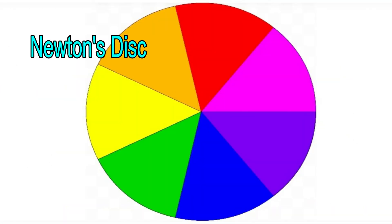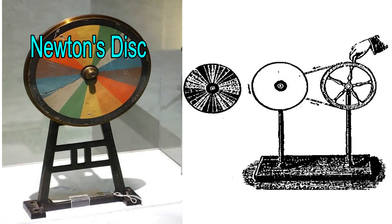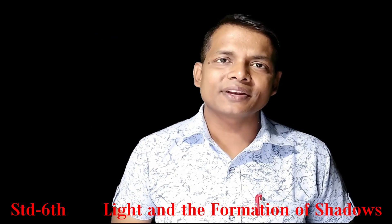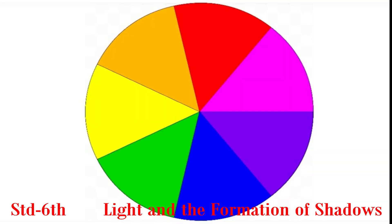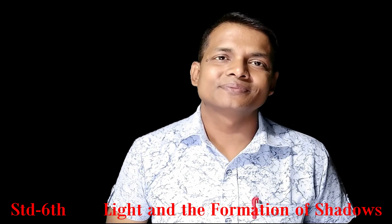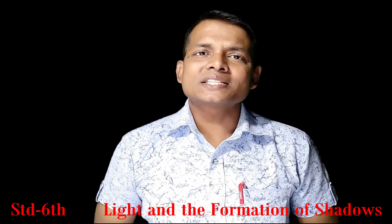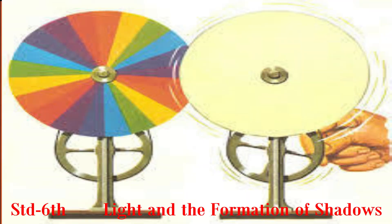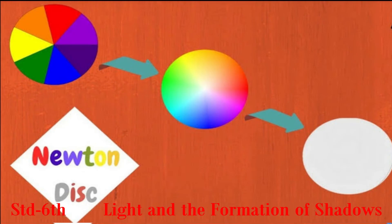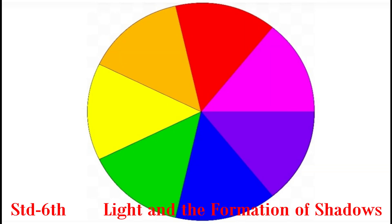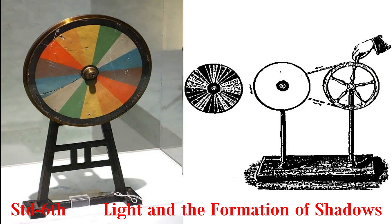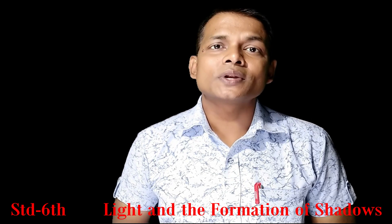Newton's Disc: Sir Isaac Newton made a special disc having seven colors. One side of the disc was equally divided into seven colors: Violet, Indigo, Blue, Green, Yellow, Orange, and Red. When the disc was fitted on a strand and rotated, the seven colors on the disc disappear. This proves that sunlight is made up of seven colors. That is why this disc is known as Newton's Disc.